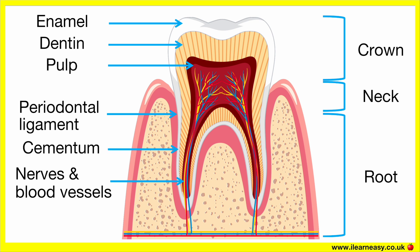Cementum. The cementum is a thin layer of bone-like material covering the root. The cementum helps to anchor the tooth to the jaw bone by attaching the tooth to the periodontal ligament.